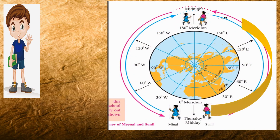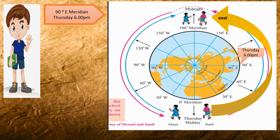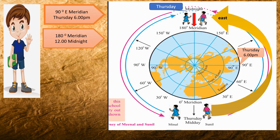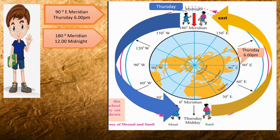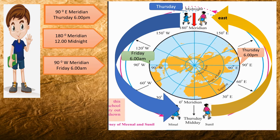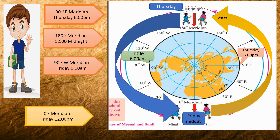Keeping this in mind, let's think about the Sunil journey. Sunil is moving towards the eastern direction, so the timing moves ahead at different meridians. At 90 degree east meridian it will be Thursday 6 pm. Sunil moves eastward and at 180 degree meridian it will be Thursday midnight — 12 o'clock. After crossing 180 degrees, it will be Friday. At 90 degree west meridian it will be Friday 6 am. After the full round of the earth, when Sunil meets at 0 degree meridian, it will be Friday afternoon 12 pm.